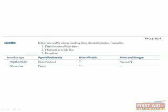In obstructive jaundice, urine urobilinogen is reduced because there's no bile passing into the gut, where the bacteria that convert bile to urobilinogen exist. So the liver is making its finished product, the conjugated bilirubin, but it can't get out of the body the normal way. Hemolytic jaundice is primarily an unconjugated hyperbilirubinemia. In a patient with an otherwise healthy liver, conjugation does continue, but there's not enough to keep up with the high levels of unconjugated bilirubin following hemolysis.